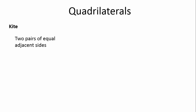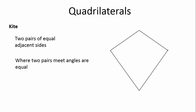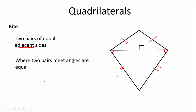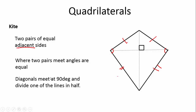And lastly, we have a kite. It's got two pairs of equal adjacent sides, and where the two pairs meet, the angles are equal. So these sides are equal, and those sides are equal — two pairs of equal adjacent sides.